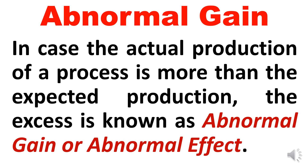What do you mean by abnormal gain? Please bear in mind — gain here doesn't mean we get something extra. When the actual production of a process is more than expected production, the excess is known as abnormal gain. For example, with 1000 units input you expected 100 units loss and 900 output, but you actually got 950 — the 50 excess is abnormal gain. It actually refers to wrong estimation of normal loss; you expected 100 loss but actual normal loss was only 50.